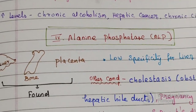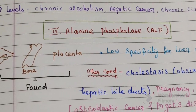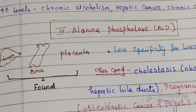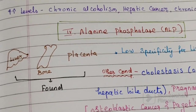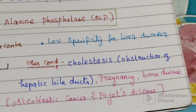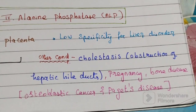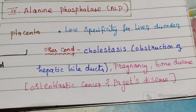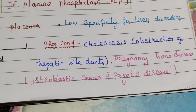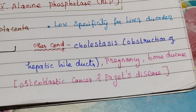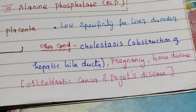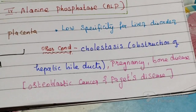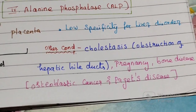The fourth parameter is ALP, alkaline phosphatase. It is primarily found in the liver, bone, and placenta. This test has low specificity for liver disorder because other conditions can also increase ALP level, including cholestasis (obstruction of intra- or extrahepatic bile duct), pregnancy, and bone diseases specifically osteoblastic cancer and Paget's disease.